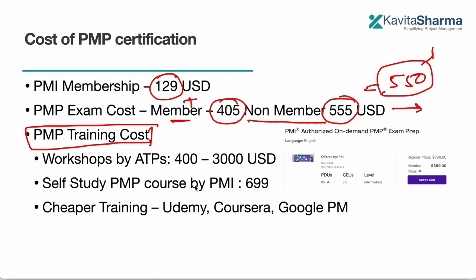So this is the cost you're going to give to pmi.org, which is the organization which conducts the PMP exam. For training, you would need to get into training and get that 35 PDUs. To get those 35 PDUs, you have different options. You can go and do a workshop with any of the ATPs. What is ATP?